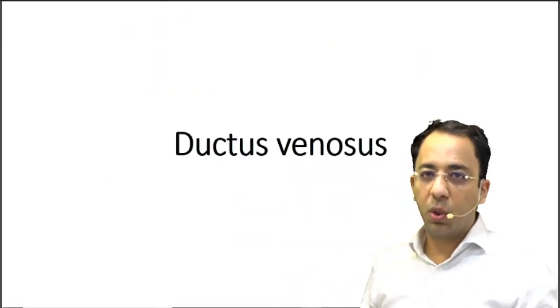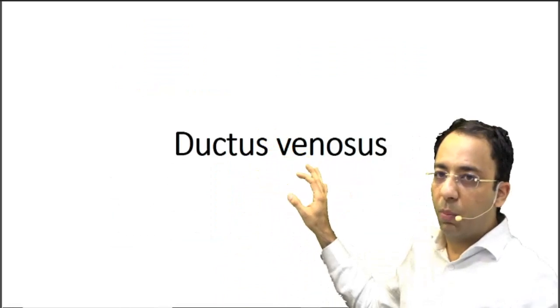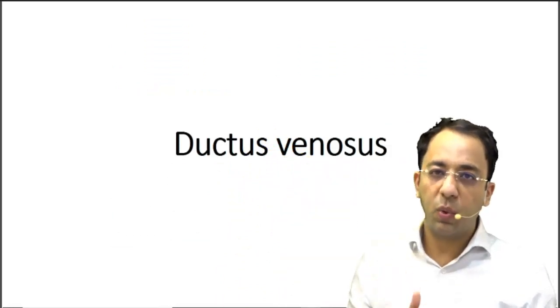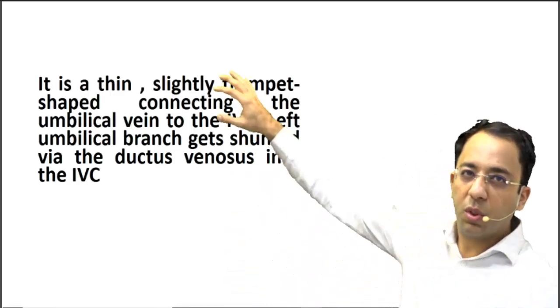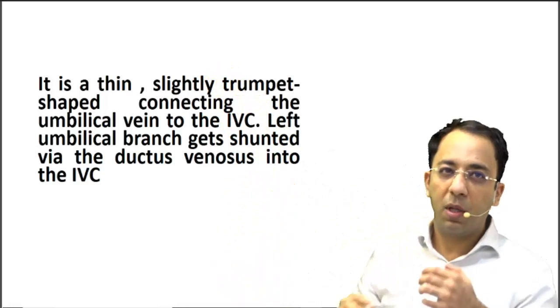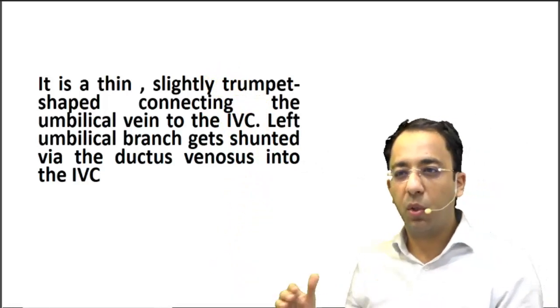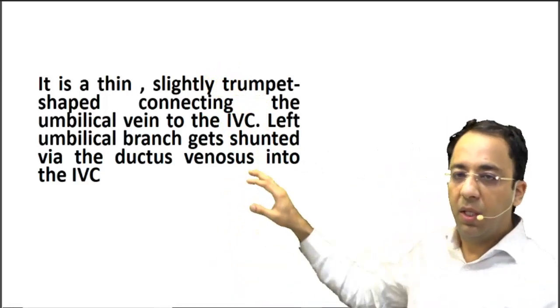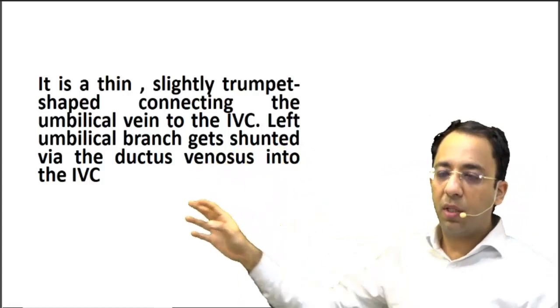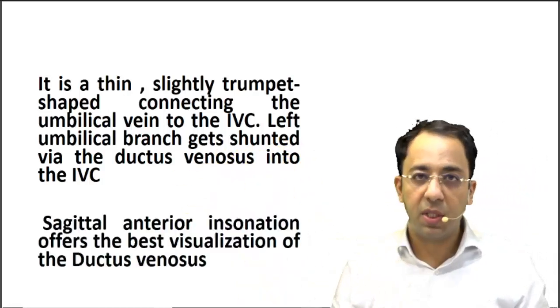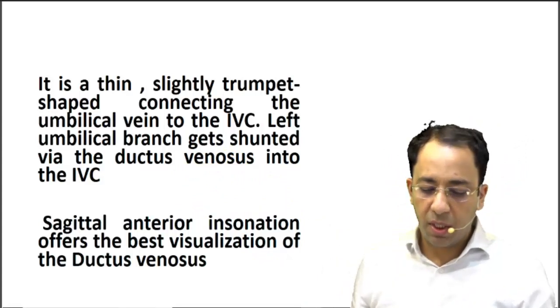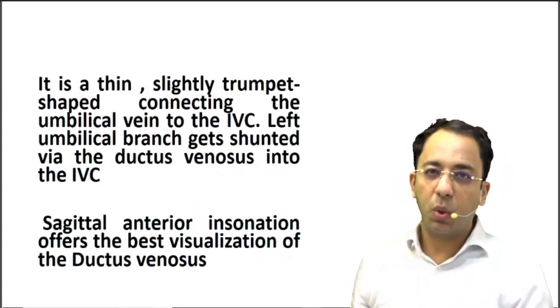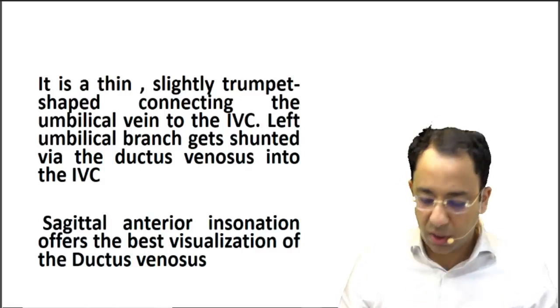Let me try to show you the vessel. What I'm going to talk about is the value of looking at ductus venosus during the Doppler study. Ductus venosus is this trumpet-shaped vessel connecting the umbilical vein to the inferior vena cava, and the blood from the left umbilical branch gets shunted via the ductus venosus into the IVC. While doing Doppler, the sagittal anterior insonation is going to give you the best visualization of ductus venosus.